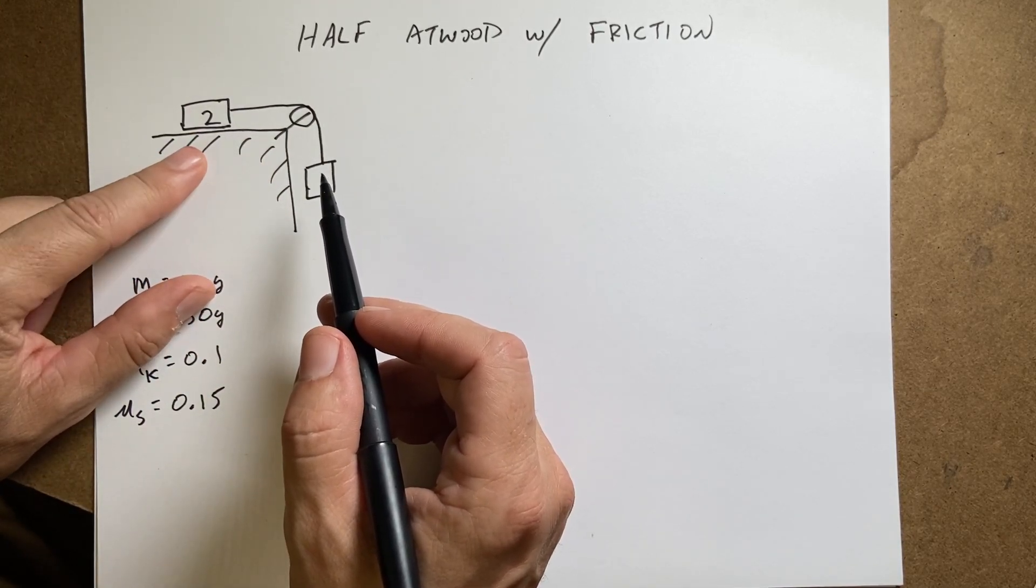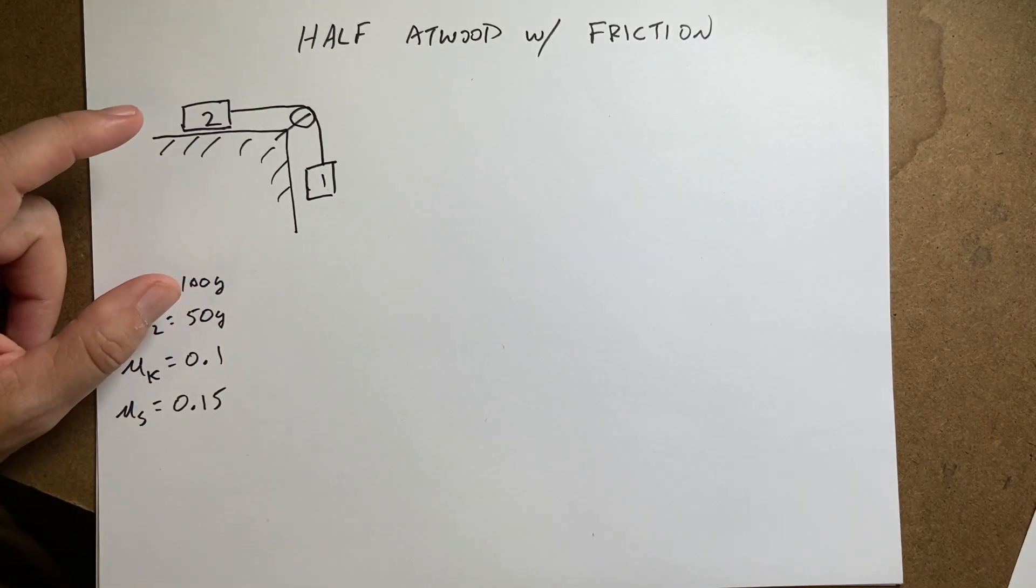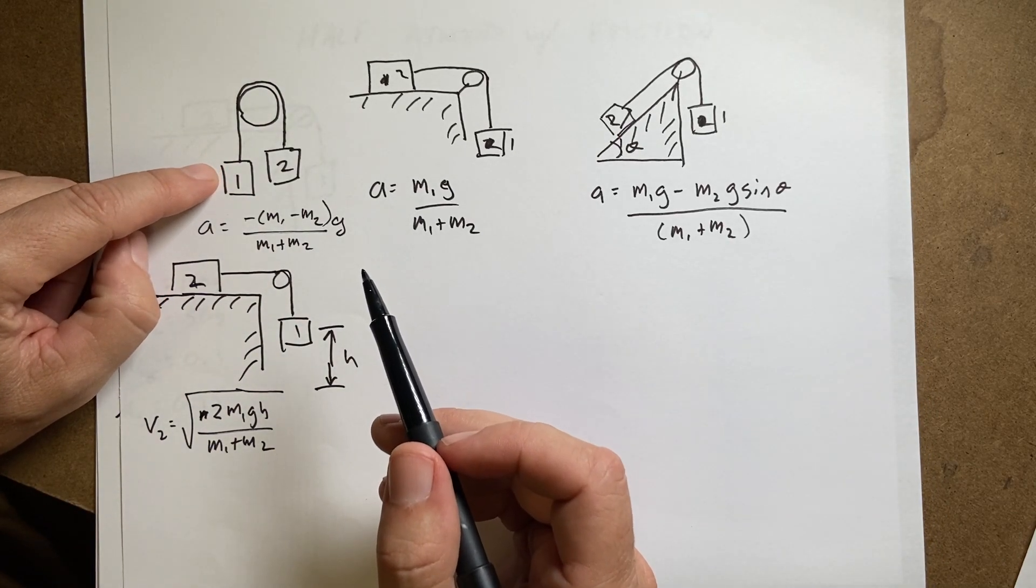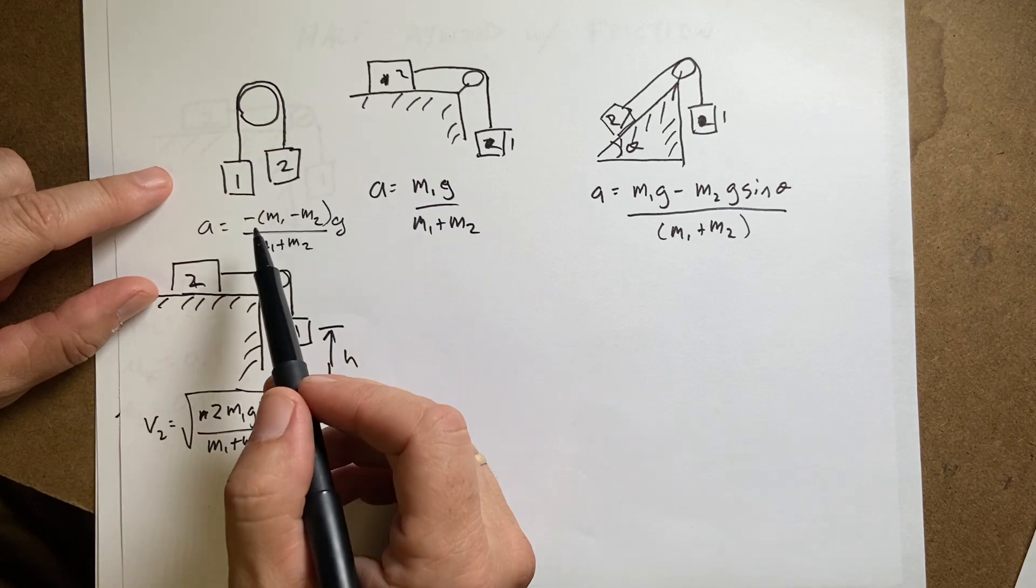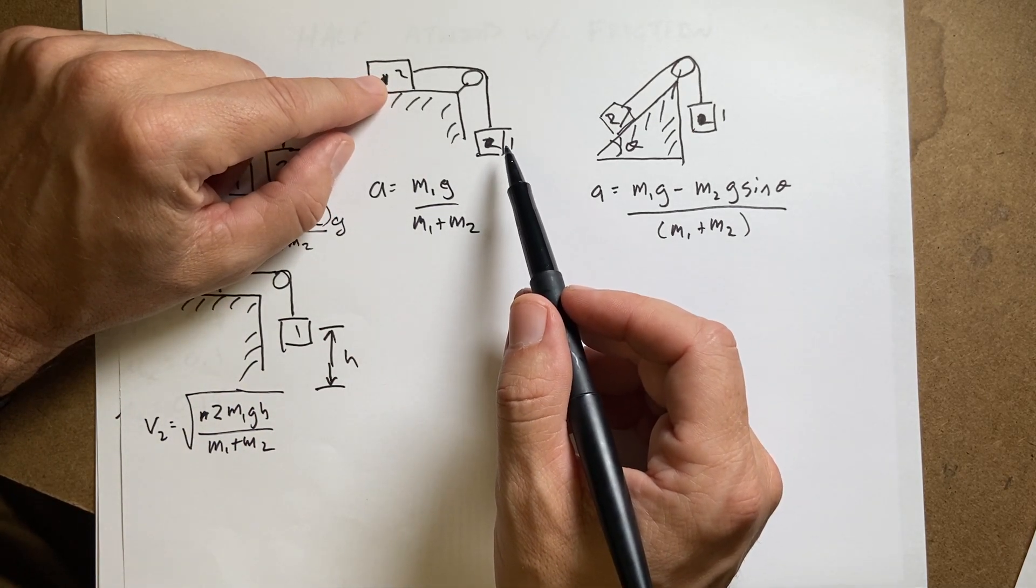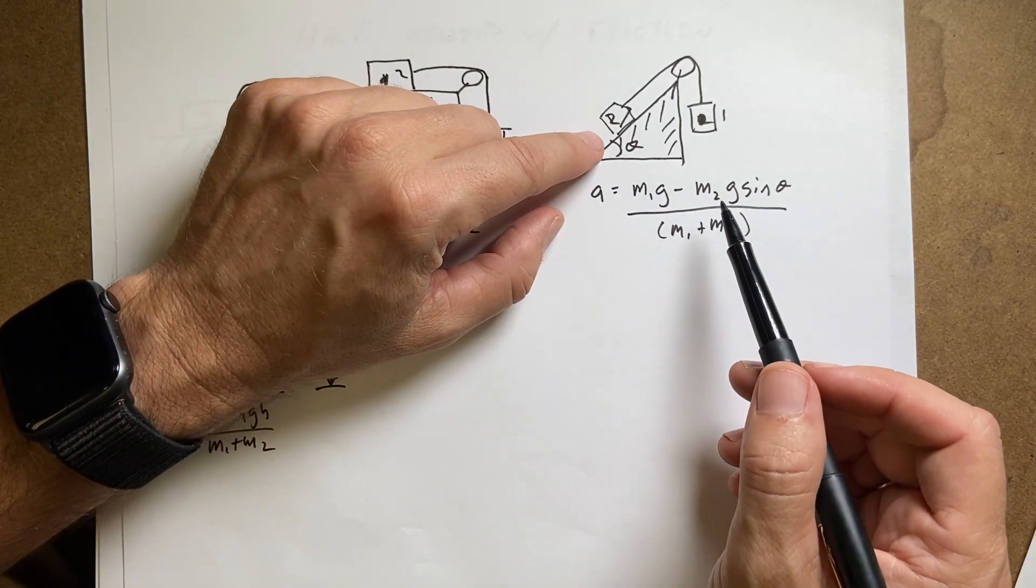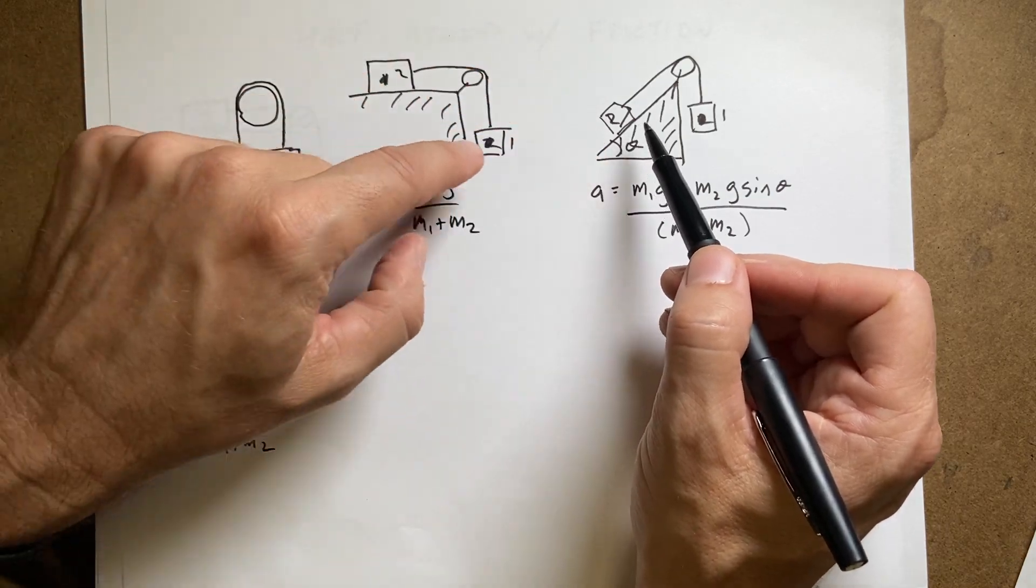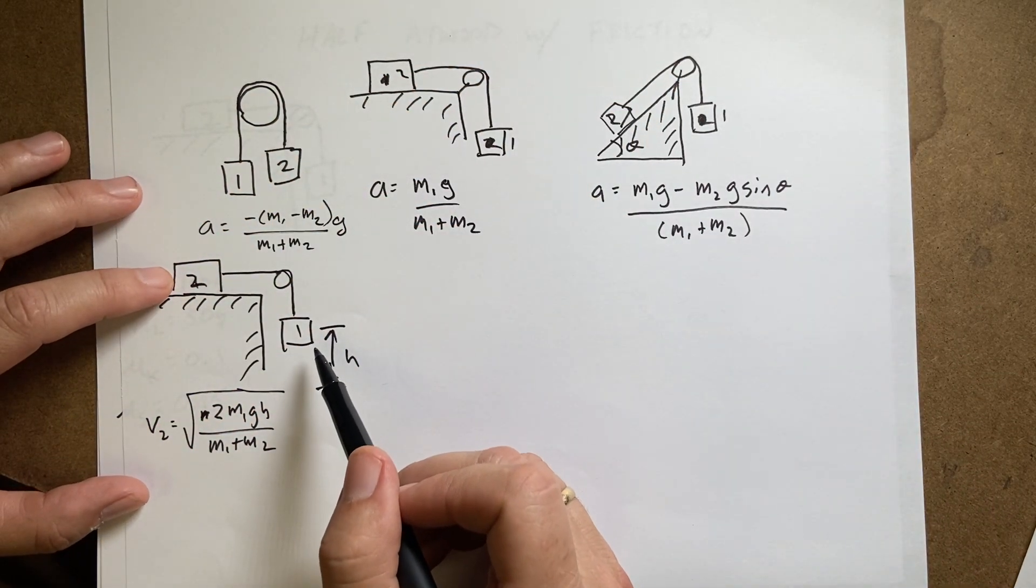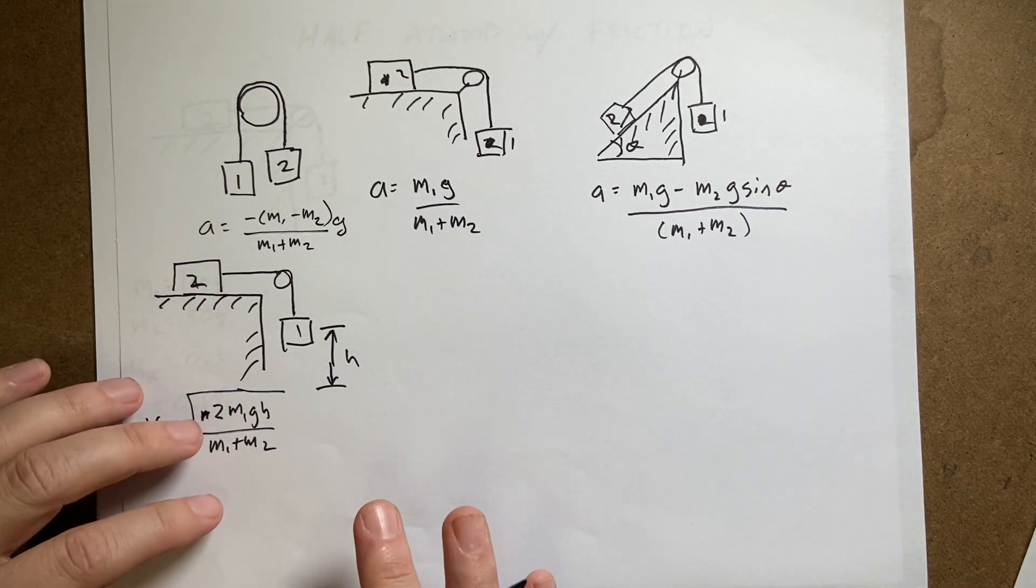In this case, I've done this problem already without friction. Let me show you the other ones I've done so far. I have a whole bunch more. The first I did was the Atwood machine, two masses hanging over a pulley. Then I did the half Atwood machine without friction. Then I did an incline plane half Atwood machine. Then finally I did this problem which is a half Atwood machine where I wanted to find the final speed using work energy.